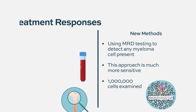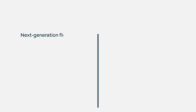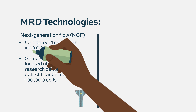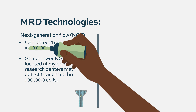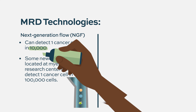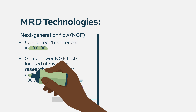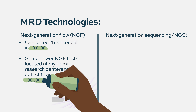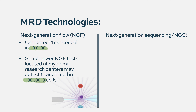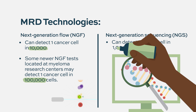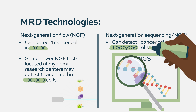There are essentially two technologies. One is called next generation flow, which allows us to identify one cell out of 10,000. The other is called next generation sequencing, which allows us to identify down to one cell out of a million.